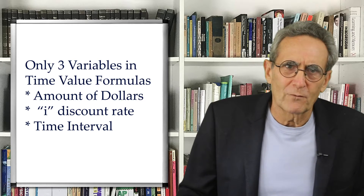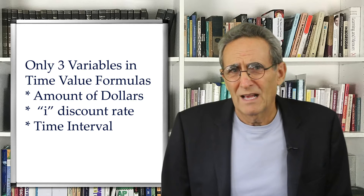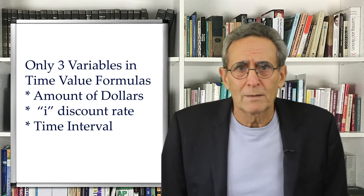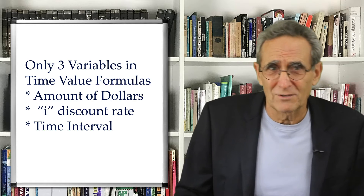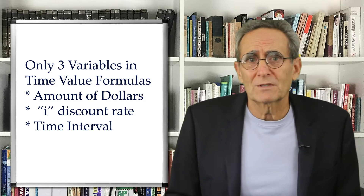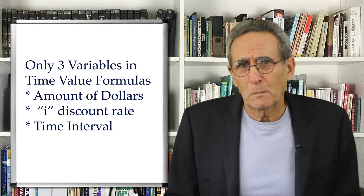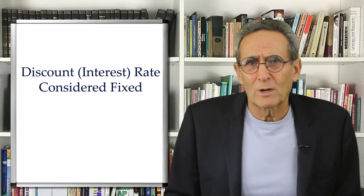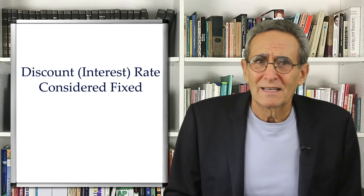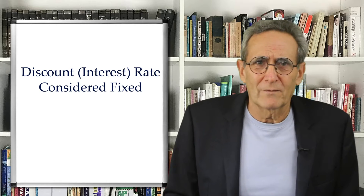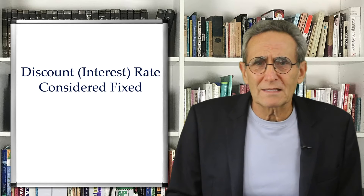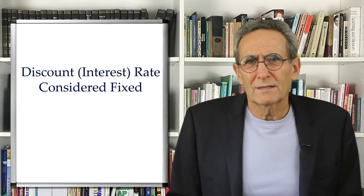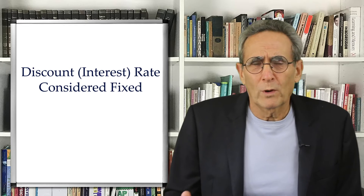All of the previously described time value formulas for converting future dollars into present dollars have been based on only three variables: the amounts of money involved; the interest or discount rate per period — the I — which is also the fundamental conversion factor; and finally, the number of time periods into the future involved in the conversion. For these formulas, the interest rate or discount rate per time period — the conversion factor I — was considered fixed. It did not matter how large or small the amounts of money involved were; the conversion rate I remained the same. It also did not matter how many time periods were involved — the same conversion rate I was applied to the second period as to the 20th period or the 100th period.